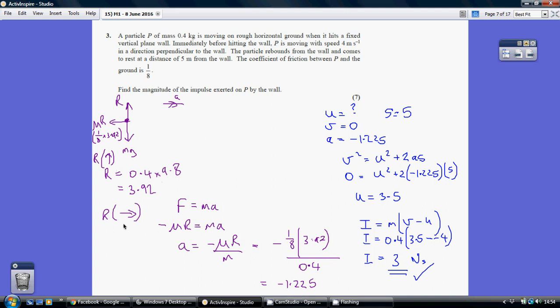So now when I resolve left to right, in the direction of motion, and using F equals MA, the only force in town is the friction, which is going right to left. So that's going to be negative, given that I'm resolving left to right. So that force is going to be minus mu times R, and that's going to equal my mass times my acceleration.